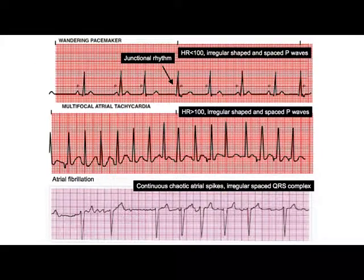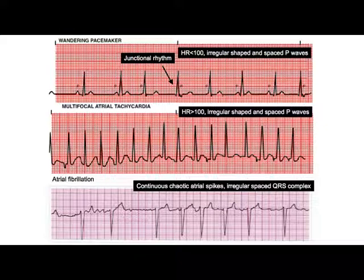The key difference between wandering pacemaker and atrial fibrillation: with wandering pacemaker, it's quiet between cardiac events — the pacemakers line up one at a time and initiate firing in different order. With atrial fibrillation, there's constant low-grade chaotic activity; the atria are always quivering and always trying to initiate a cardiac cycle. The similarity is that sometimes signals go through, just irregularly. The difference is that in atrial fibrillation, there's no order at all — the atria are just always on.